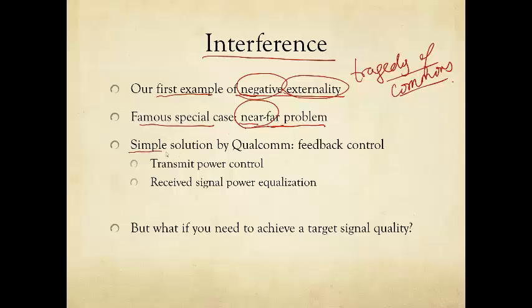Now there was a simple solution provided by Qualcomm in the late 80s that uses the idea of feedback control. Now later, we'll see much more complicated feedback control in the network. In this case, this is a simple one hop from the base station to different mobile stations. The degree of freedom here is exactly transmit power. And it says that, well, adjust your transmit power based on where you are.